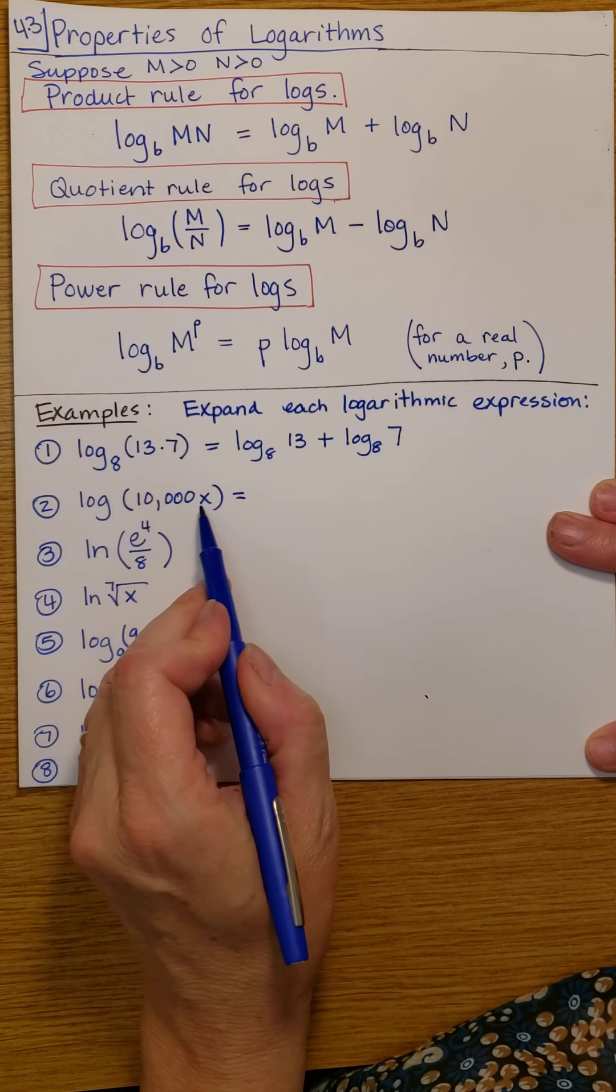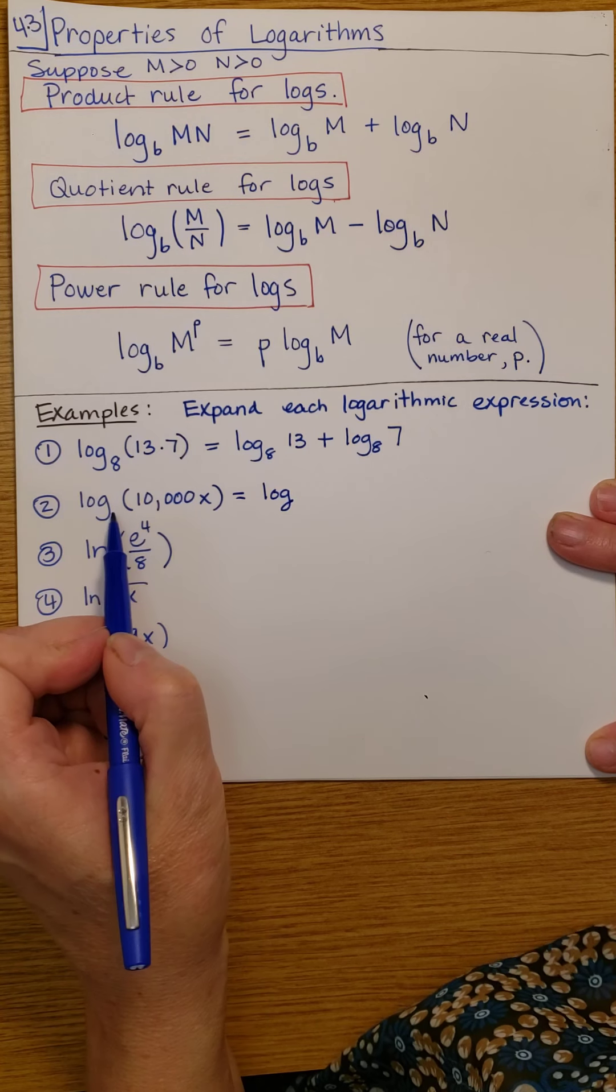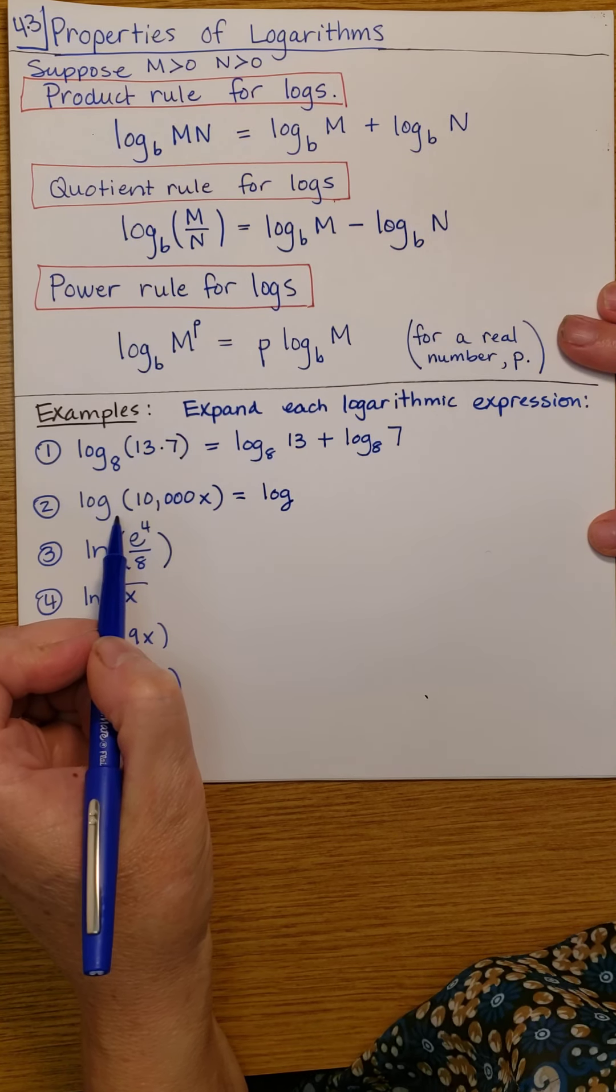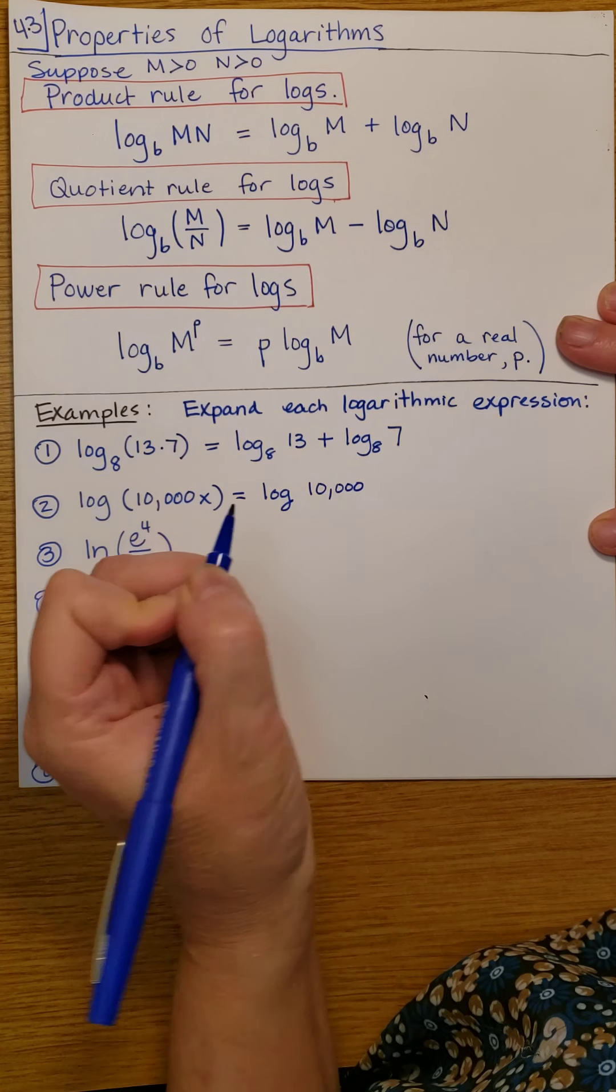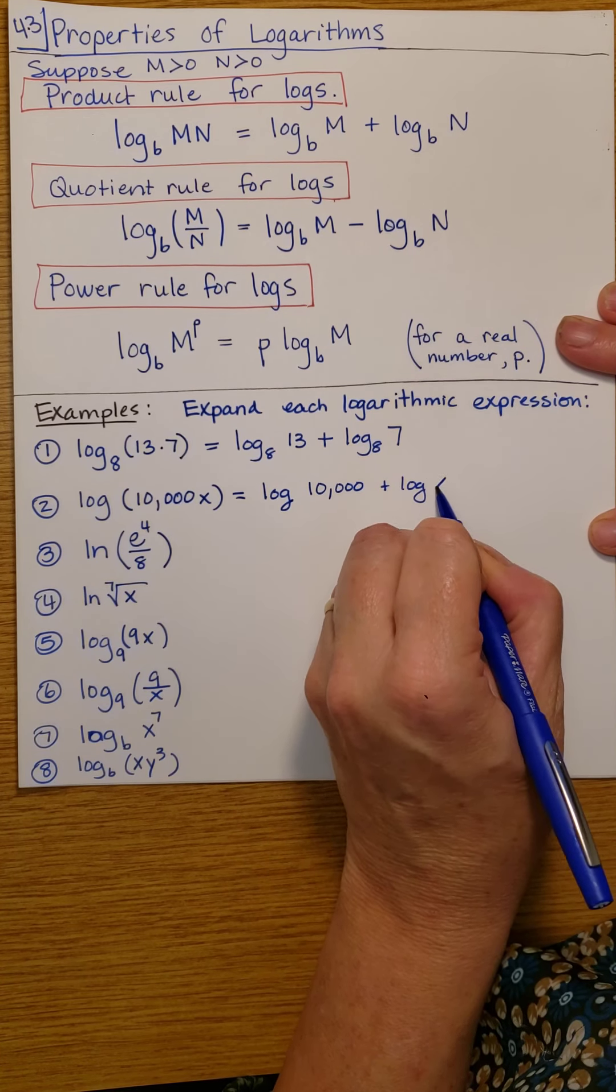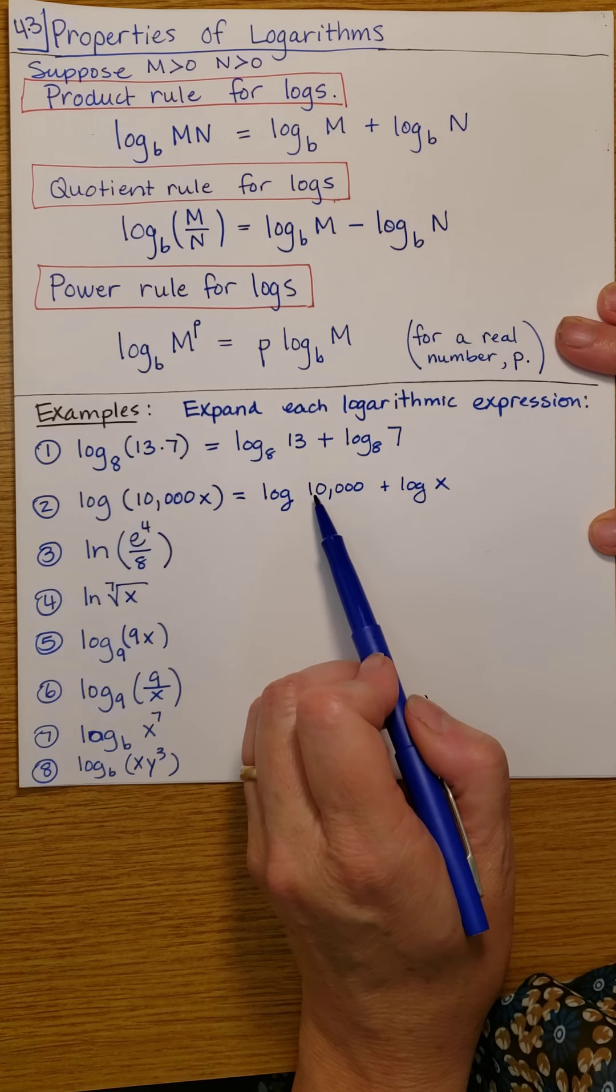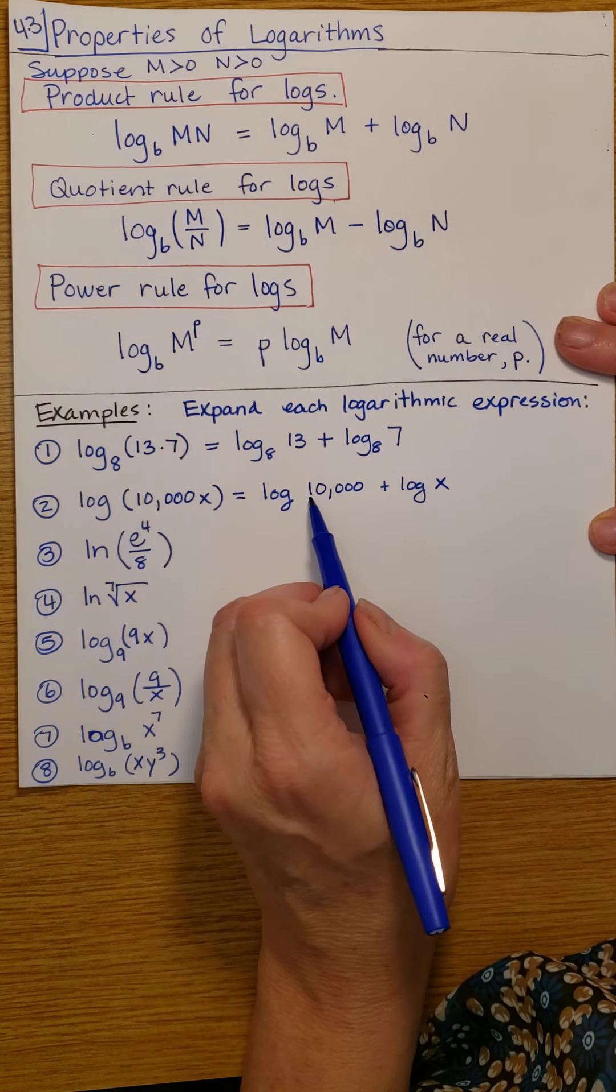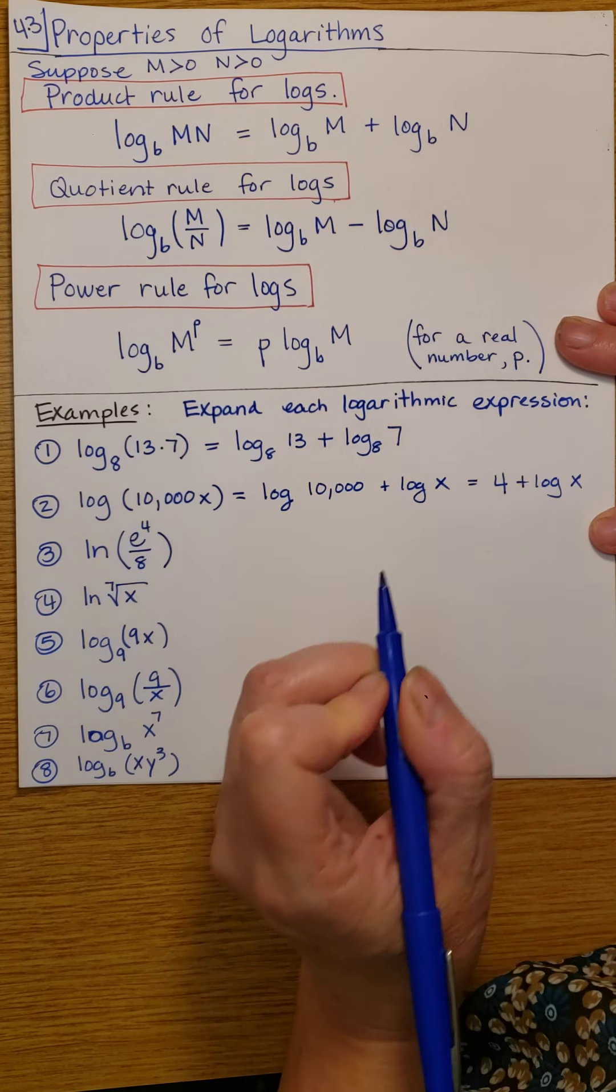Here we have another product. This is the common log because the base is not expressed here. We assume that it's 10, base 10. So we have log base 10 of 10,000 plus log of x. Now, log base 10 of 10,000, notice that 10,000 is just 10 to the fourth power, and so this is going to be 4. So we have 4 plus log x.